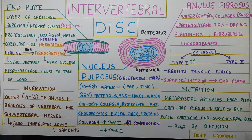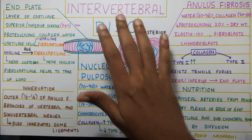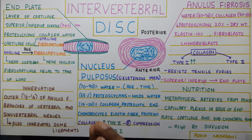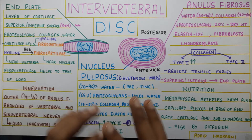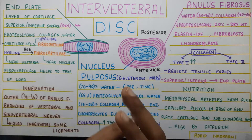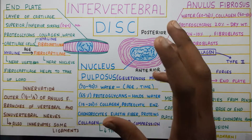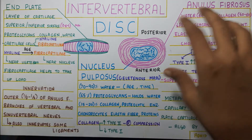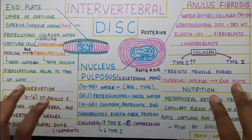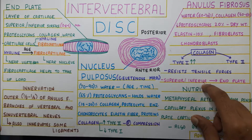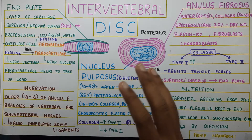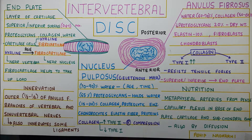In this video, I will be talking about the intervertebral disc — the disc which is present between the two vertebras. I know this looks like a lot of information, but I will break it down and make it as simple as possible. You will have to remember just 2-3 points under each sub-component of the disc, and then we will cover the nutrition and innervation of the disc. It's going to be a very short video.